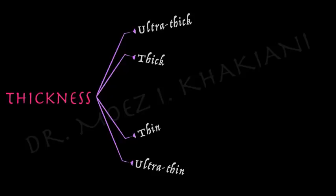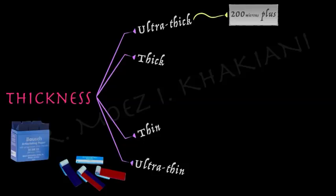Ultra thick articulating papers generally lie in the cluster of 200 microns and above. Sharing with you a couple of examples available in the market. If you were to ask me where I would use a 200 micron or thicker articulating paper, my answer is very simple: absolutely never. In my understanding, there is no justifiable reason to use an articulating paper this thick, so ultra thick 200-plus micron papers I do not use in practice at all.